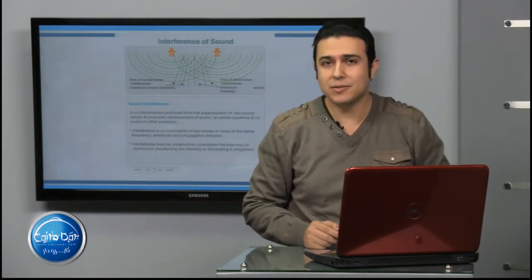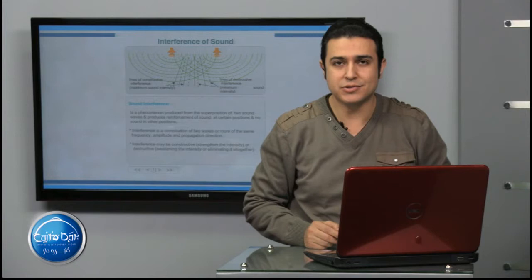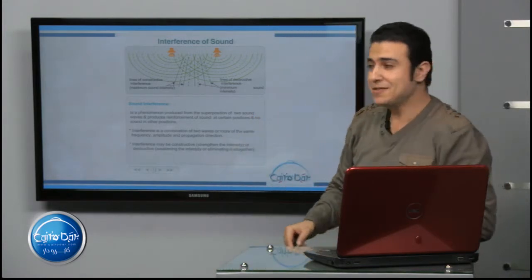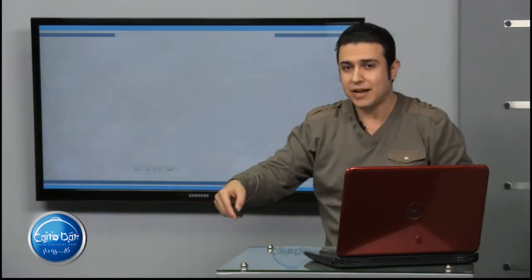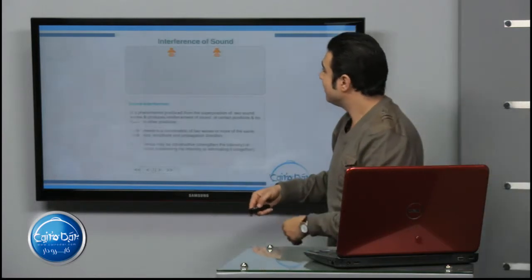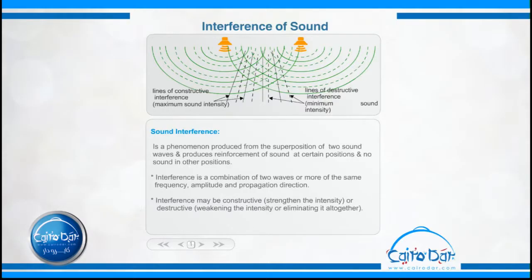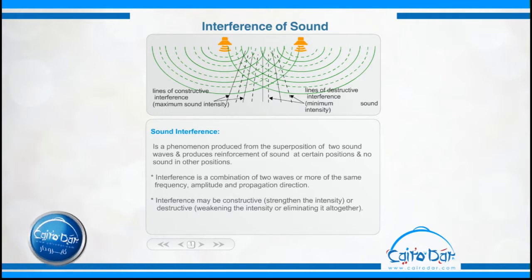Let's start with sound interference. Pay attention to this wonderful flash. Here we have two sources of sound. They produce two waves. These two waves meet together, interfere with each other, and superpose together. There is a superposition.